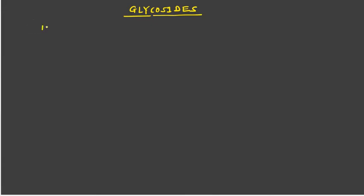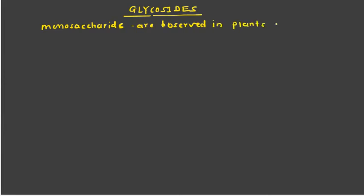Monosaccharides are observed in plants and animals in the form of glycosides.